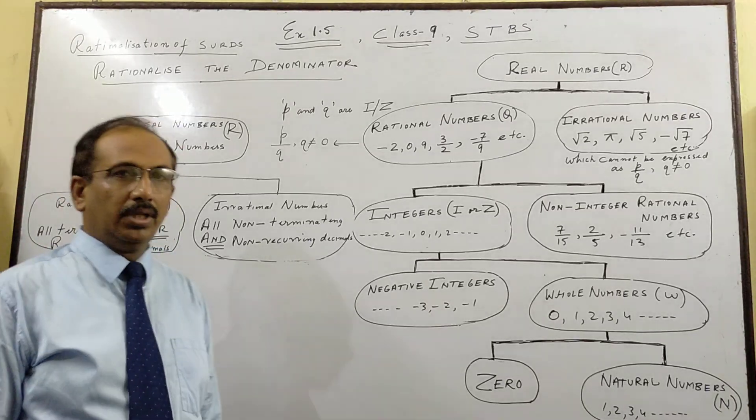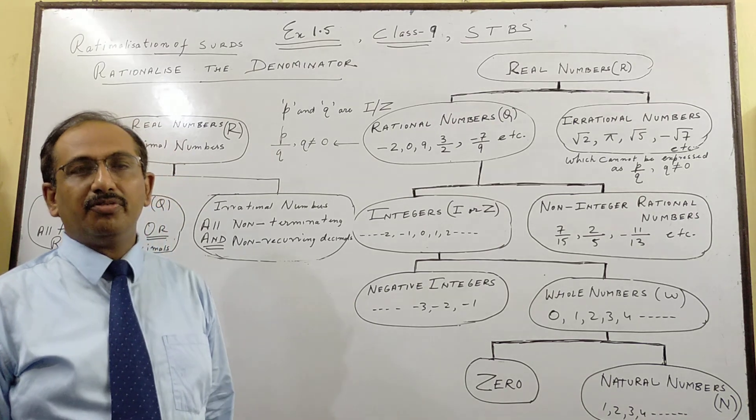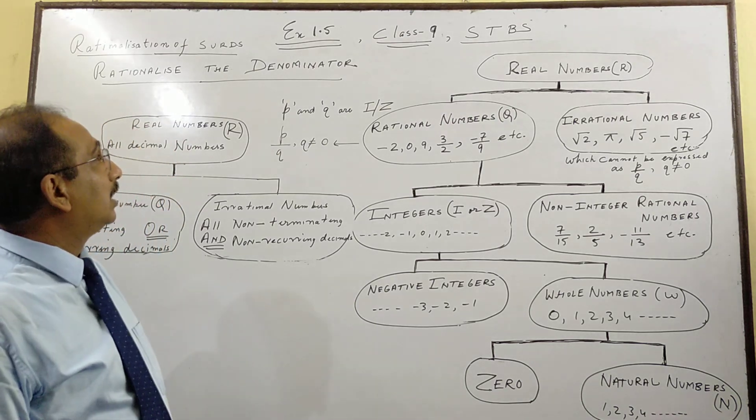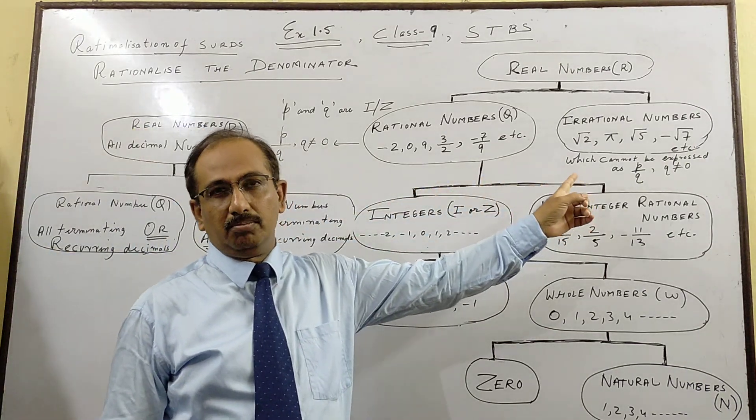Hello students, today we are going to start the very first chapter from class 9 book which is Rational and Irrational Numbers.